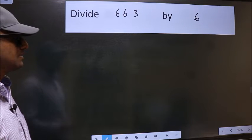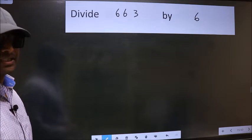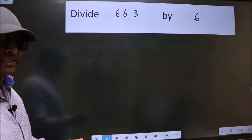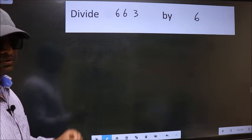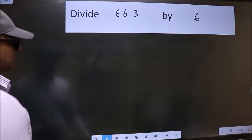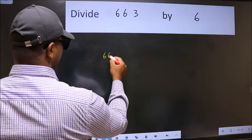Divide 663 by 6. While doing this division, many do this mistake. What is the mistake that they do? I will let you know, but before that we should frame it in this way: 663 divided by 6.